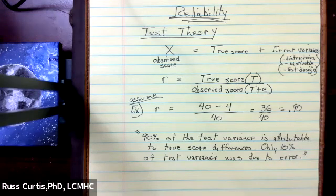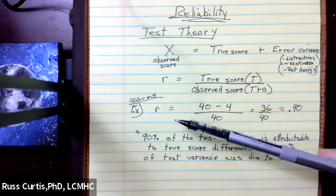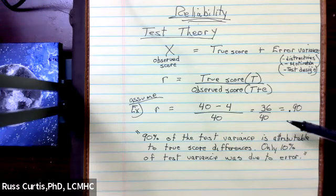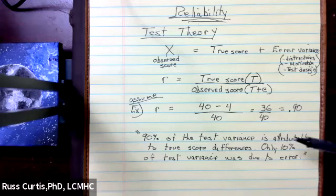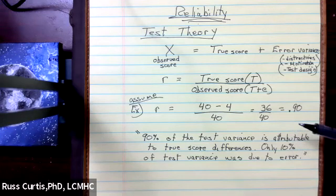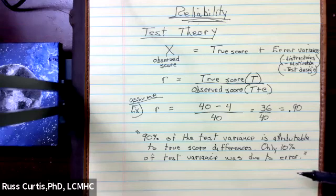And only 10% of the test variance was due to error. And in the behavioral health, we're okay with the reliability coefficient above 0.7 or so with behavioral method things, personality inventories, anxiety, depression, and so forth.